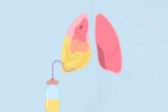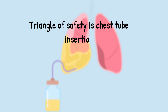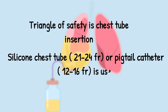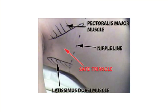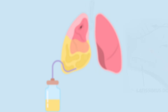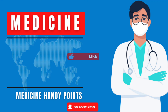The mid-clavicular line marks the aspiration site, while the triangle of safety is used for chest tube insertion. A siliconized chest tube or Seldinger catheter is preferred as they are small and cause less tissue damage. The triangle of safety lies between the anterior and posterior axillary folds at the nipple line in the axilla.